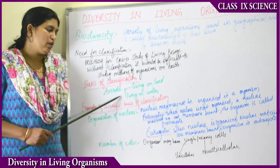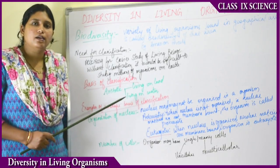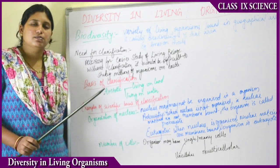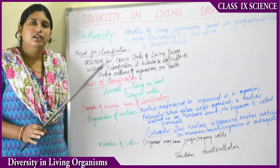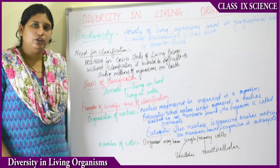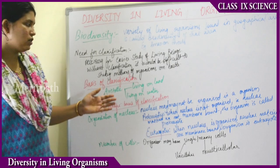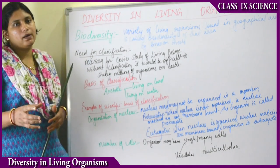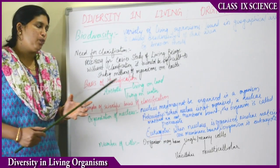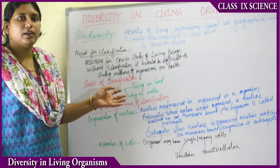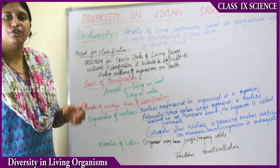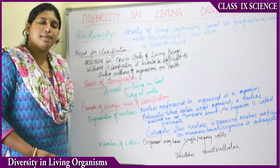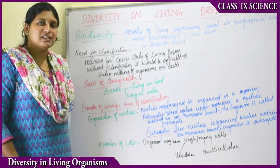The first classification was given by Aristotle. Aristotle classified organisms into only two types based on whether they live on land or in water. This classification was easy but not very specific — particular features were not considered — so it was not widely accepted. Later, more modifications and other bases of classification were developed.